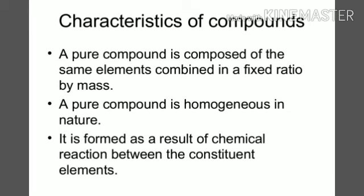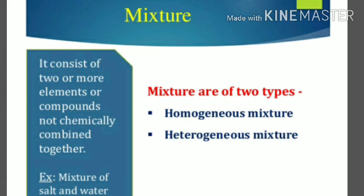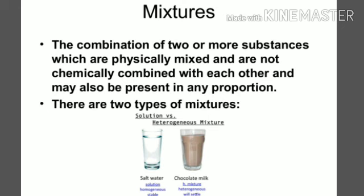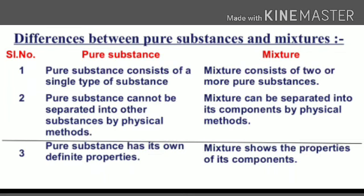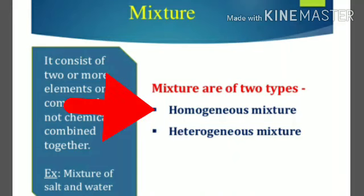All compounds are also known as pure substances because elements combine in a fixed ratio chemically, and we cannot separate them by any physical method. Now, if a substance is not pure, we call it a mixture. A mixture is a material which contains two or more different kinds of particles — atoms or molecules — which do not react chemically but are physically mixed together in any proportion. Note that mixtures do not have a fixed composition. Mixtures are of two types: homogeneous and heterogeneous.